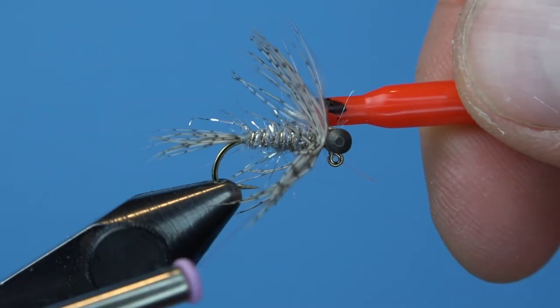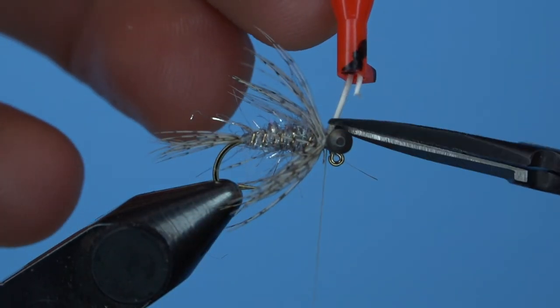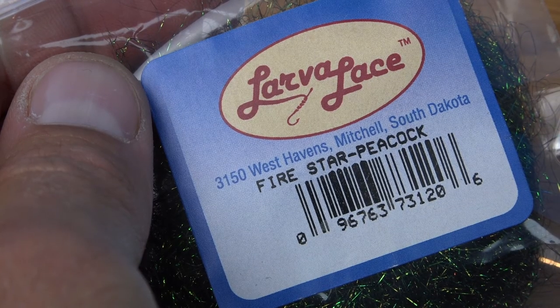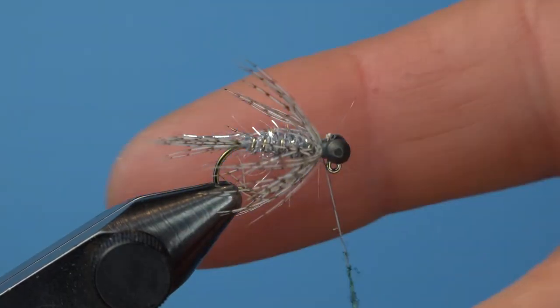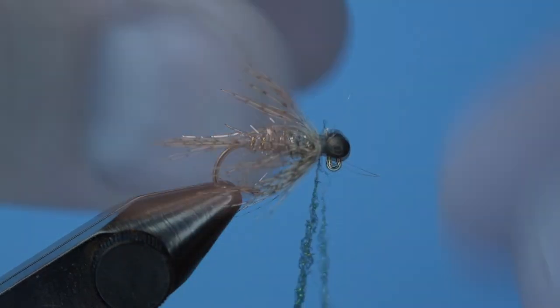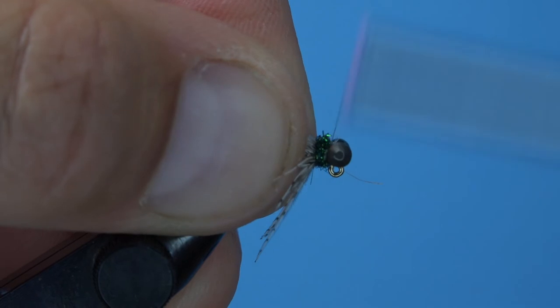When you run out of feather fibers, it's time to capture the stem and then trim the excess. Do your best to cover up that stem with thread before grabbing some Firestar dubbing to finish the fly. This is peacock, but you can mix and match to add some hot spots or more natural colors.